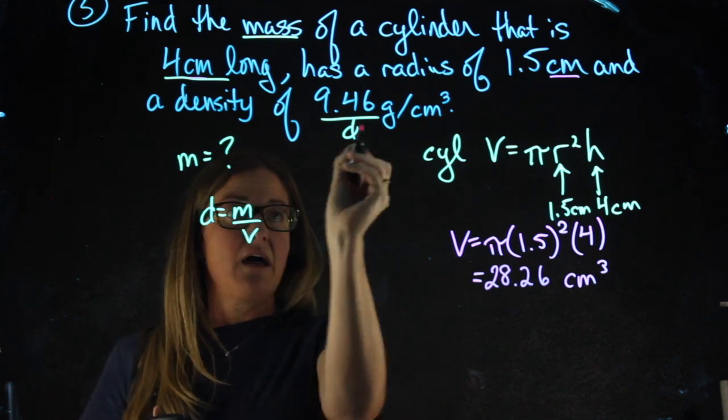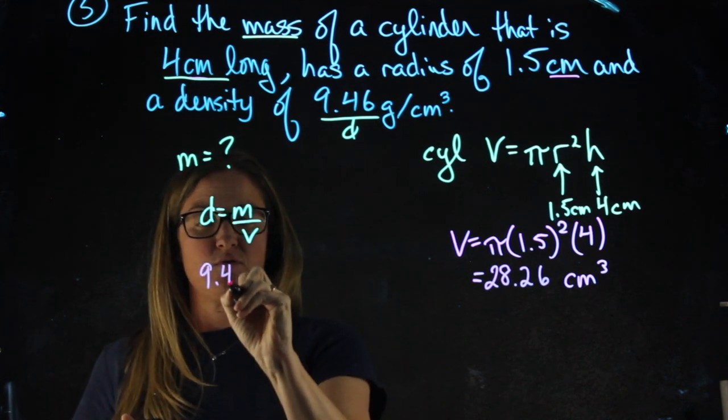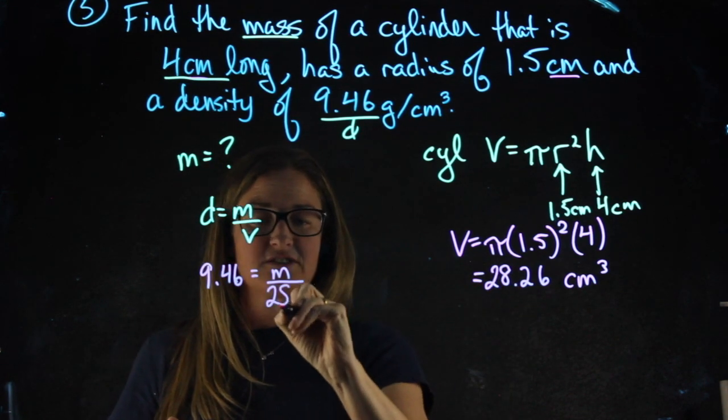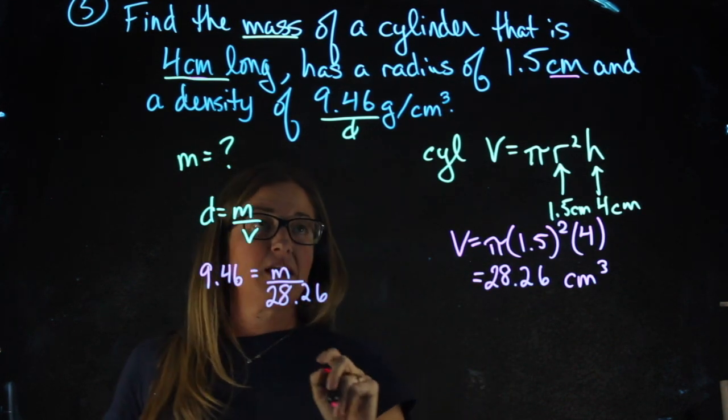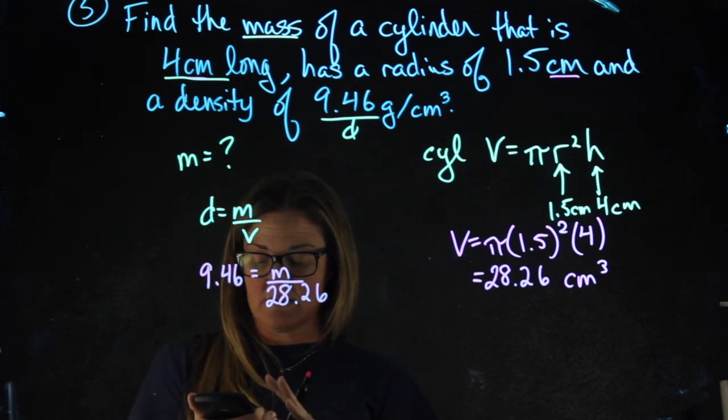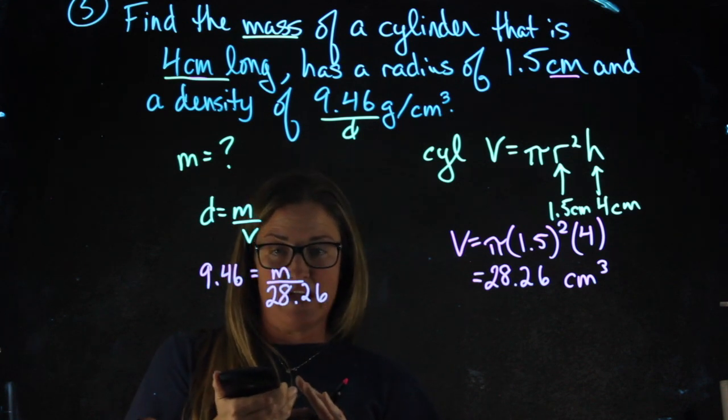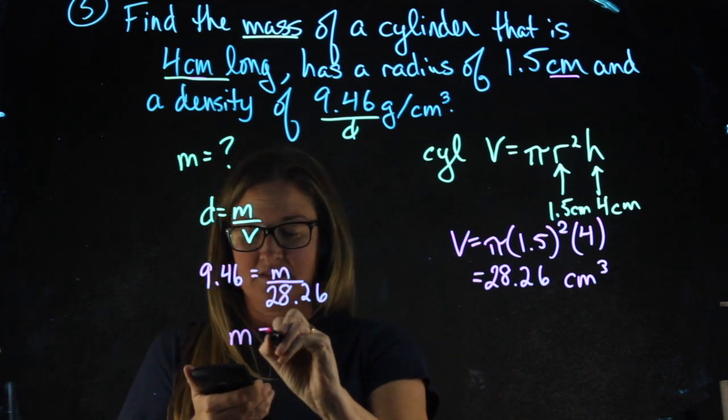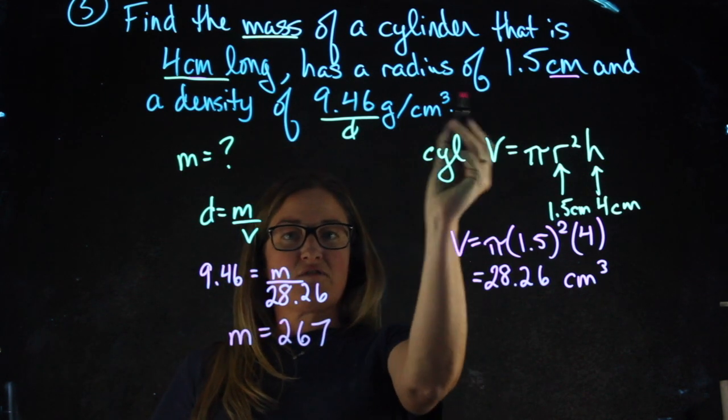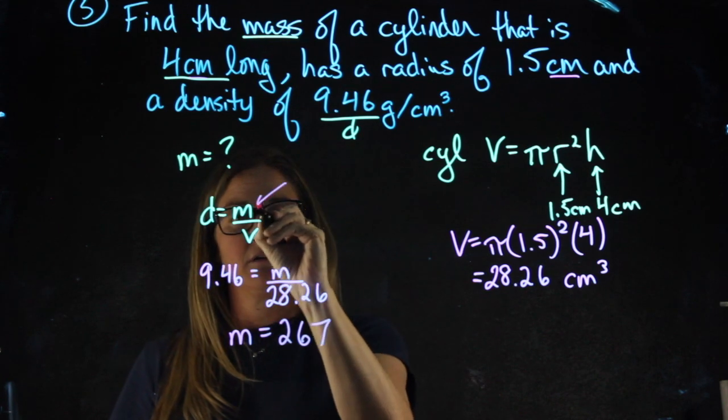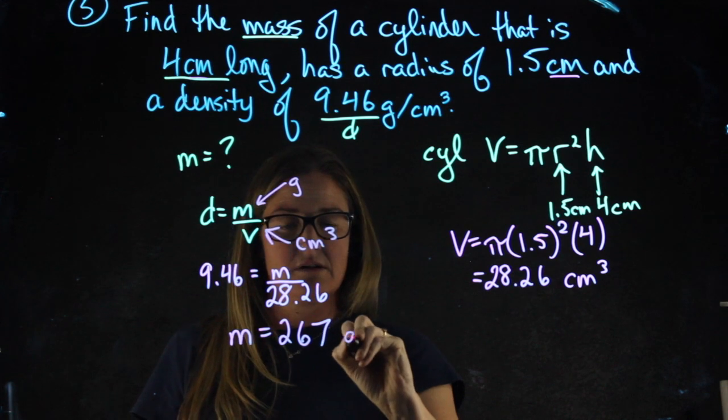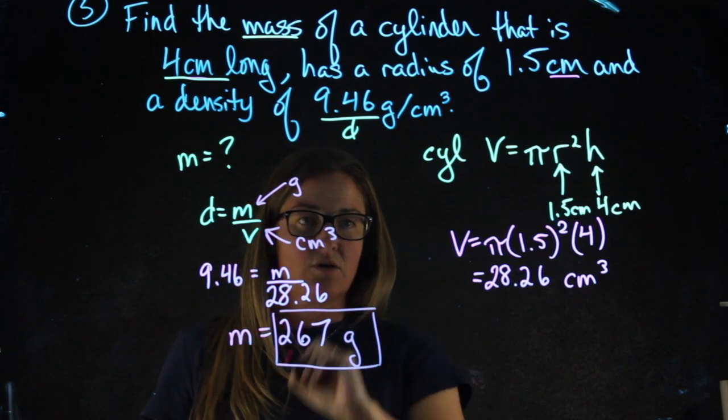Plugging into my density formula, I know the density would be 9.46. I'm looking for the mass. The volume is 28.26. I'm going to multiply both sides by 28.26. So 9.46 times 28.26 gives me a mass of 267. Since my density is in the units of grams per centimeter cubed, mass is in grams and volume, indeed was in centimeters cubed. This is 267 grams.